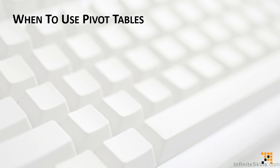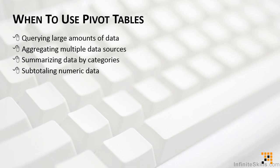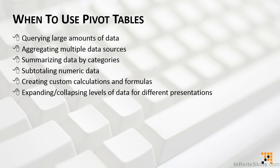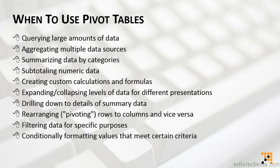So when should we use pivot tables? There are several times when you'll find that they become very useful: when we're trying to query large amounts of data, when we're trying to aggregate data from multiple data sources, and when summarizing data by categories. We can use pivot tables for subtotaling numeric data and even creating custom calculations and formulas. Pivot tables also give us the ability to expand and collapse levels of data for different types of presentations, drill down to the details of summary data, and rearrange or pivot rows to columns and columns back to rows. Pivot tables also make filtering data for specific purposes very easy, and we can apply conditional formatting to values that meet certain criteria.